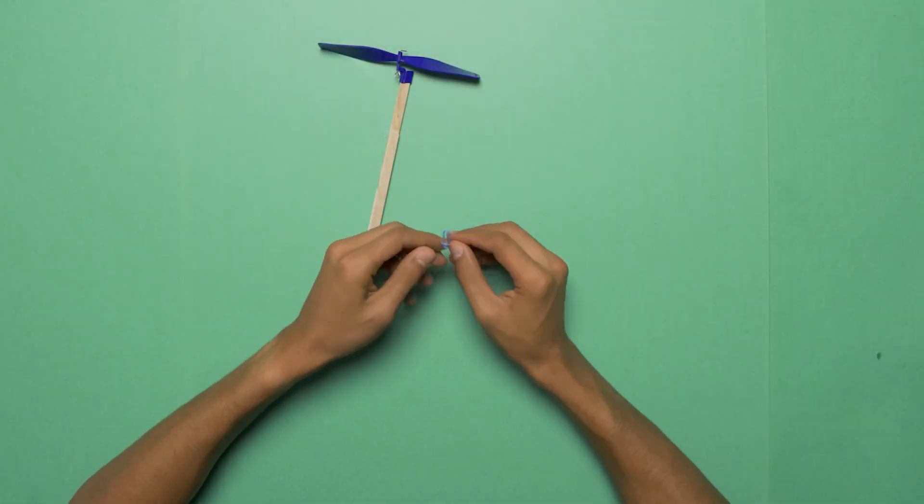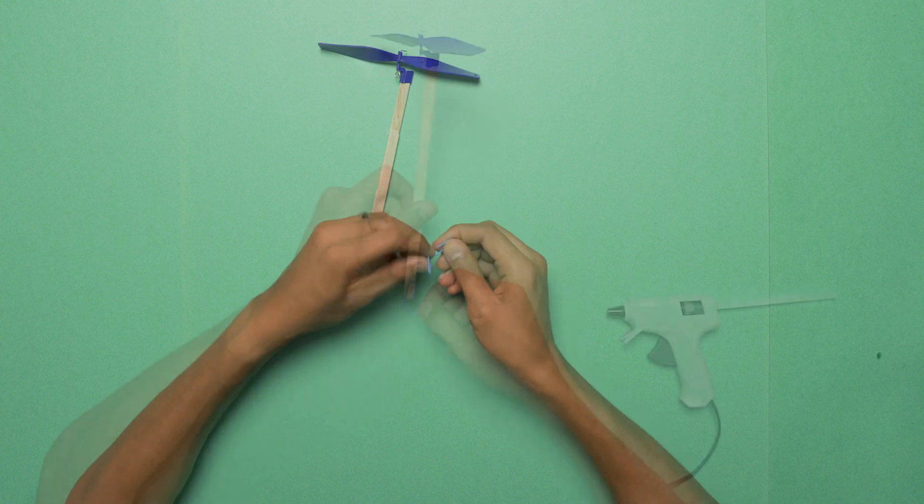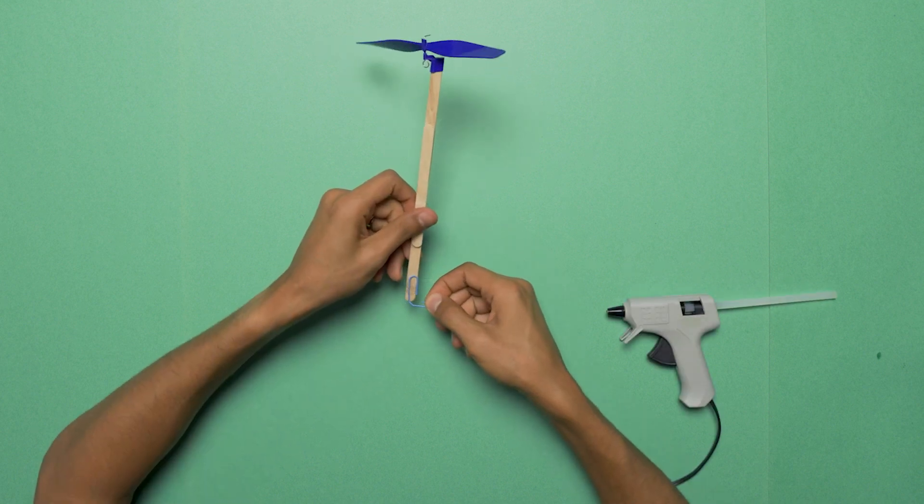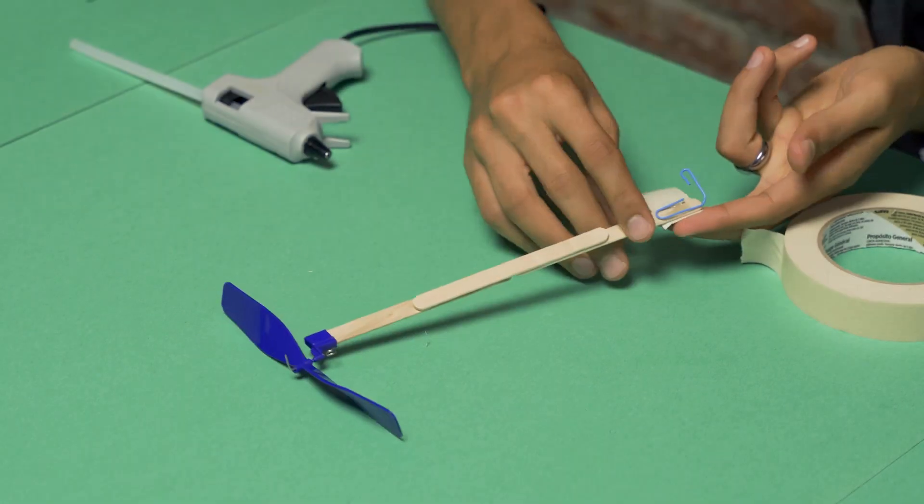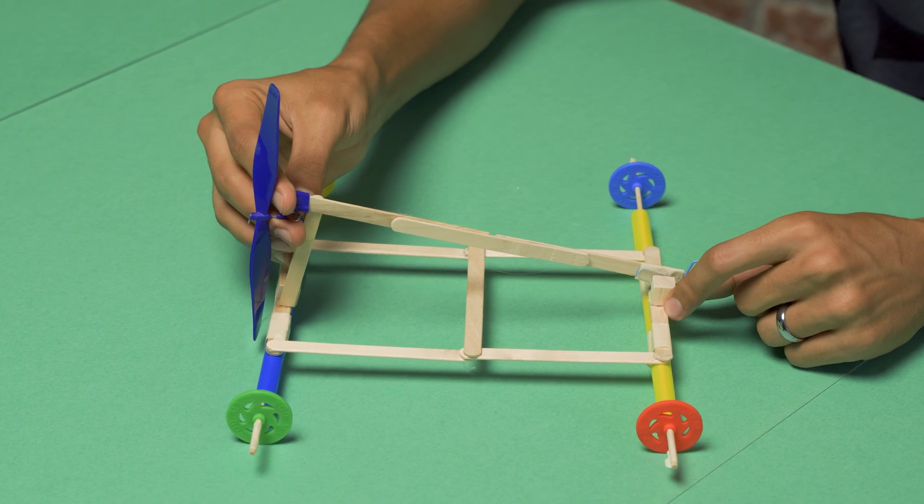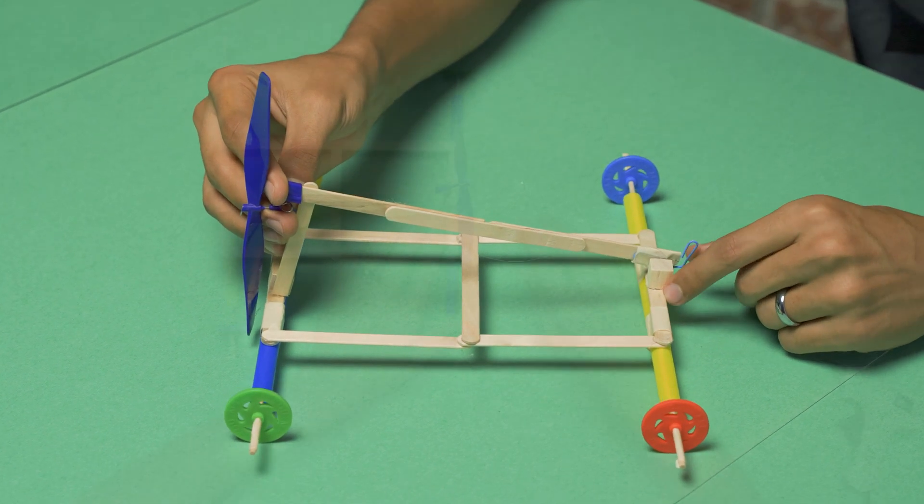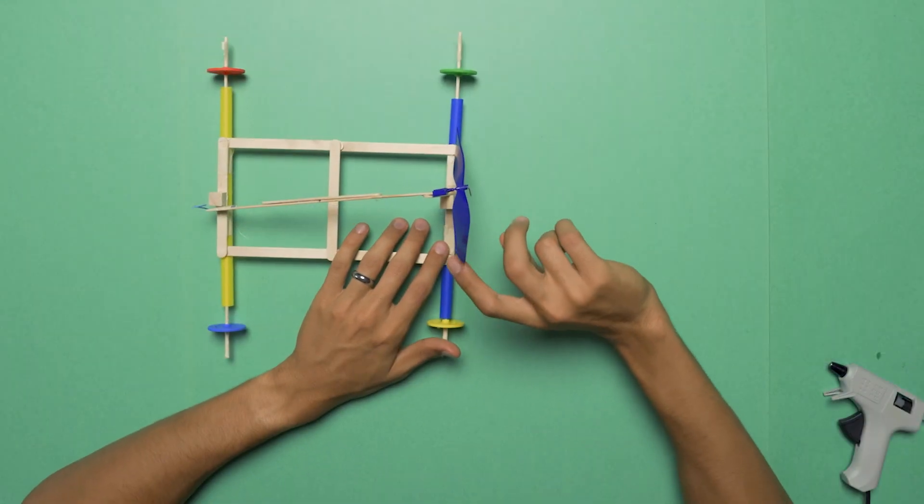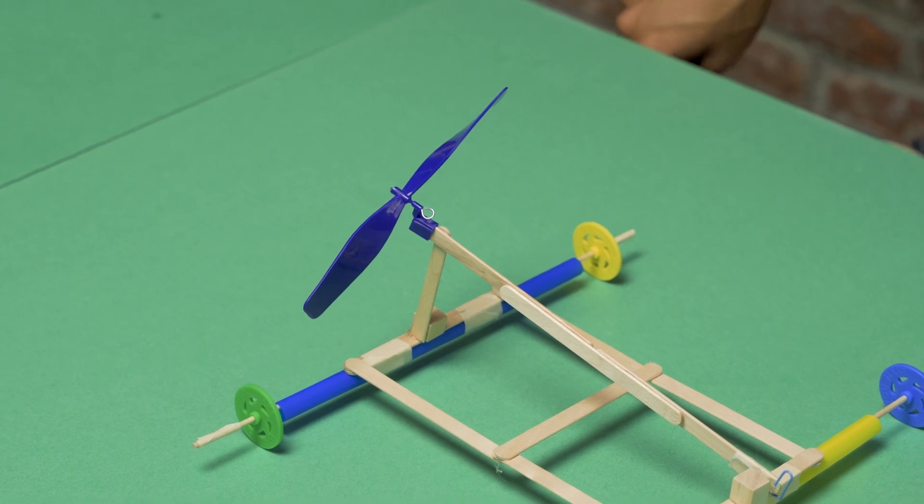We're going to bend our paper clip and make a little L shape, and then we're going to glue that onto the mast. Then we're going to add some tape just to make sure it's nice and sturdy. And now we're going to glue our mast onto our car. When you've glued the mast on, just make sure the hook is facing right side up.